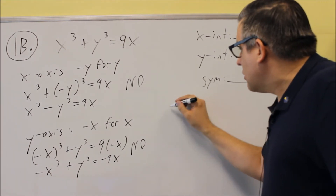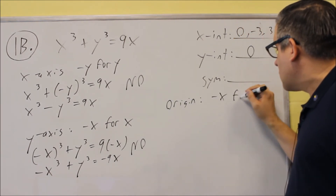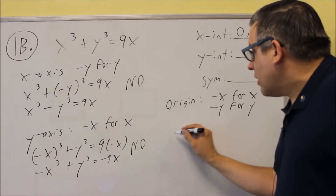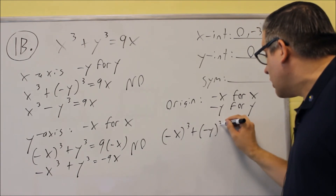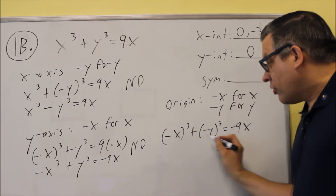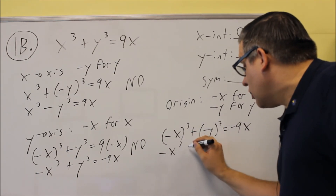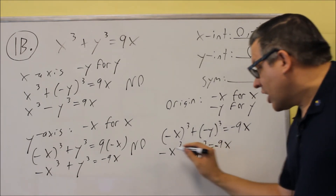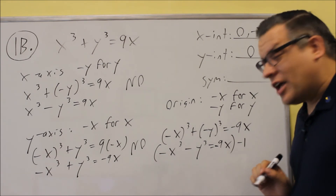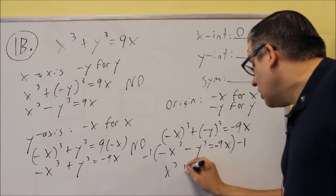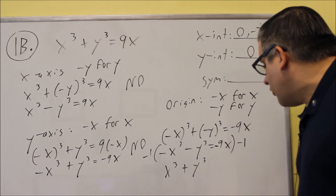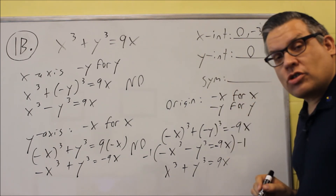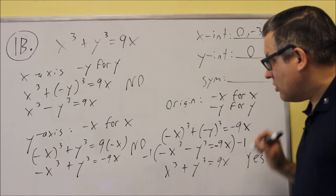For origin symmetry, we substitute both negative x for x and negative y for y. We get (negative x) cubed plus (negative y) cubed equals 9 times (negative x), which gives negative x cubed minus y cubed equals negative 9x. Since both sides have negatives raised to odd powers, multiplying the whole equation by negative one turns all terms positive, and we get exactly the original equation back. So yes, this equation does have origin symmetry.